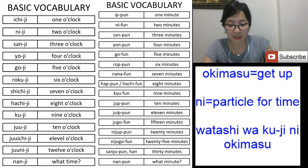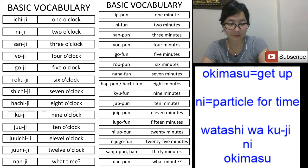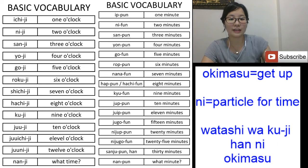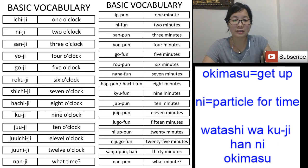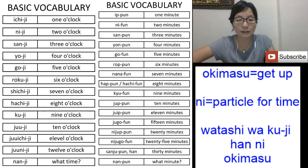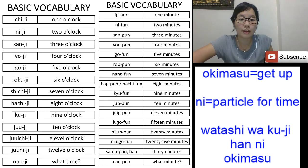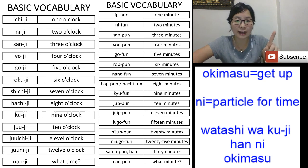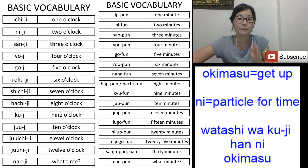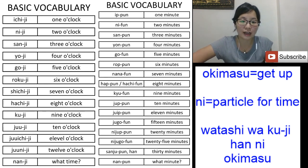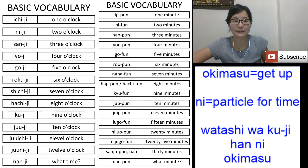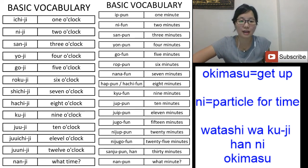I can also say 'watashi wa ku-ji han ni okimasu'. 'Han' means 30 minutes — it literally means 'the half'. So 'ku-ji han' is 9 and a half, meaning 9:30. 'Ku-ji han ni okimasu' means 'I get up at 9:30'.